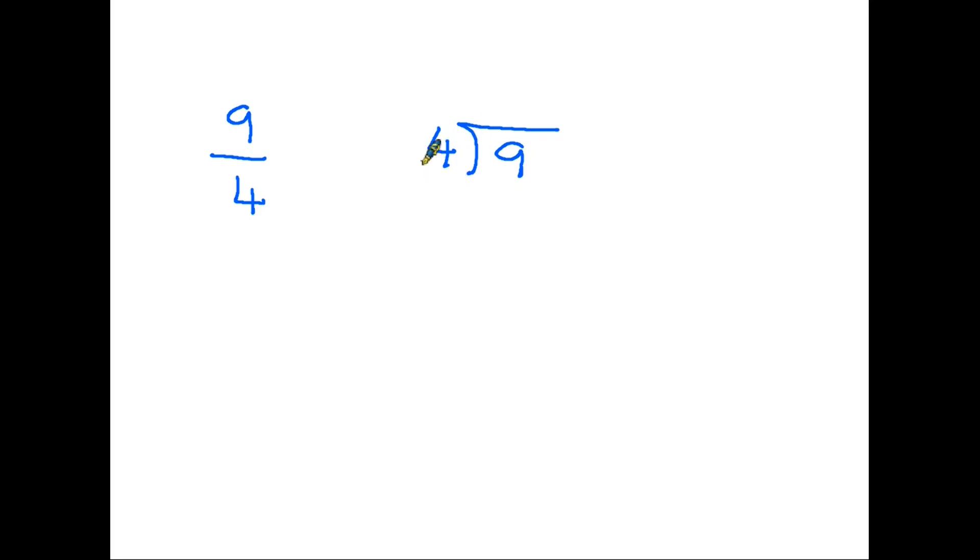So, your first question is, how many 4s are there in 9? And of course, the answer is 2. Now, 2 times 4 is 8. Therefore, we have 1 remainder. So, the answer to this question is 2 remainder 1. And that gives us the solution to our problems. Because the 2 is the 2 full pizzas, and the 1 remaining is the quarter that is left over. So, as we saw previously, 9 over 4 is 2 and a quarter. So, there's the method.